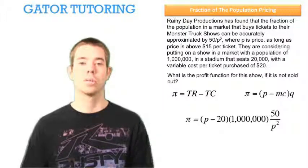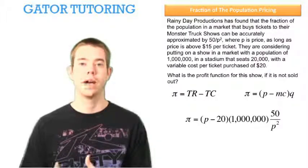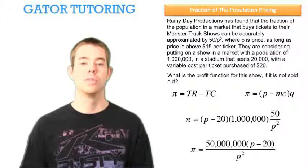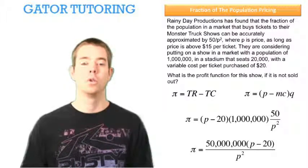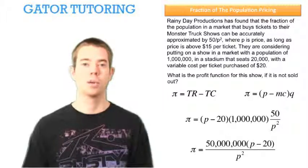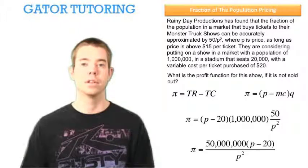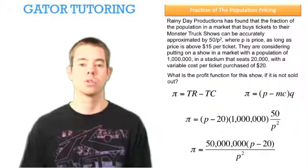Now, in order to match it to one of the answer choices, we're going to have to algebraically manipulate it a small bit. So we multiply through the 50 to the 1 million, change the order of things a little bit, but it's all multiplication so that's perfectly legal, and put the P squared underneath everything. This is just to match it to one of the answer choices, but we haven't changed anything.